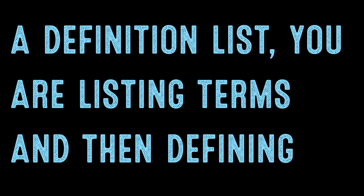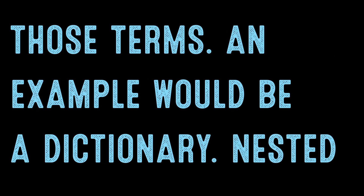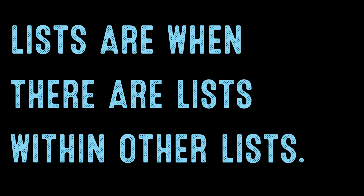With a definition list, you are listing terms and then defining those terms. An example of this would be a dictionary. Nested lists are when there are lists within other lists.